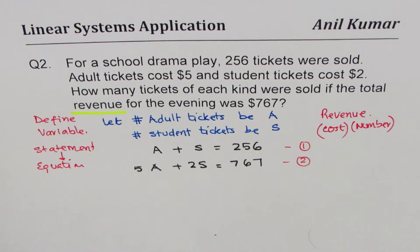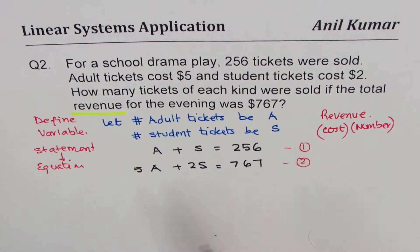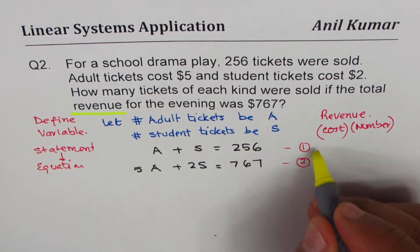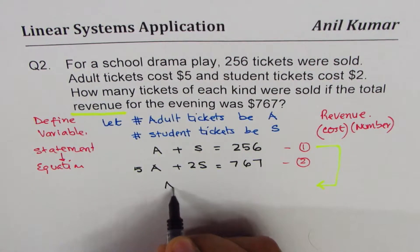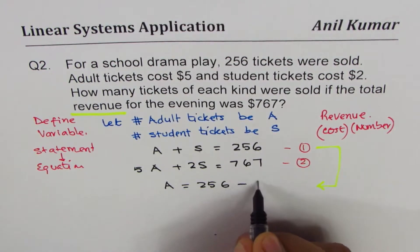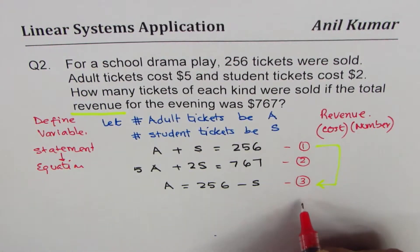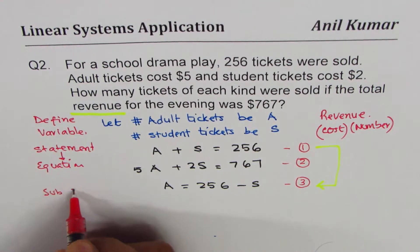That is how you should begin solving your question: read your question, define variables, write statements as equations. Now it is simple. You need to apply either elimination or substitution. From equation 1, we can rewrite A in terms of S. We write this as A equals 256 minus S — we'll call this equation 3. Then we substitute equation 3 into equation 2.